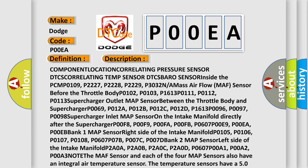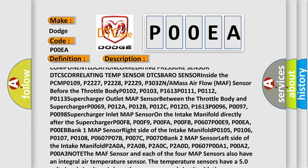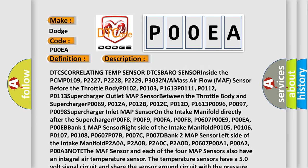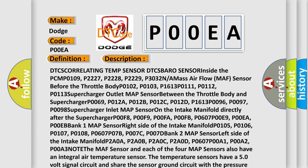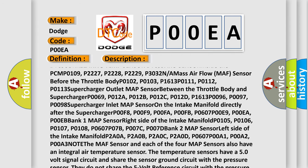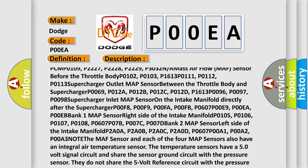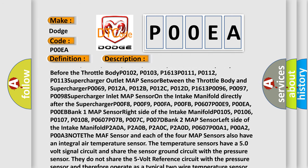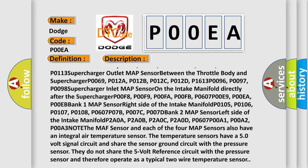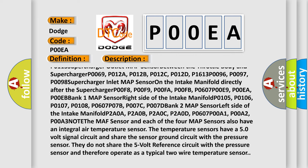Component location correlating pressure sensor DTCs, correlating temp sensor DTCs. BARO Sensor inside the PCM: P0109, P2227, P2228, P2229, P3032. Mass Airflow Sensor before the throttle body: P0102, P0103, P1613, P0111, P0112, P0113. Supercharger outlet MAP sensor between the throttle body and supercharger: P0069, P012A, P012B, P012C, P012D, P1613, P0096, P0097, P0098.